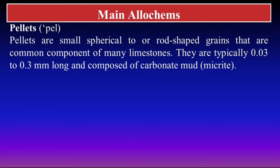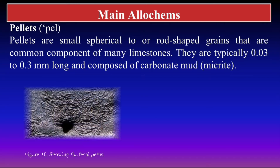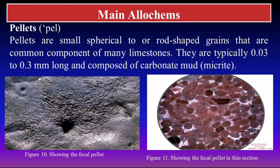The fourth allochem is pellets, abbreviated as 'pell'. Pellets are small spherical to rod-shaped grains, very small in size — about 0.03 to 0.3 millimeters — and they are composed of micrite. Here you can see pictures under thin section and on hand specimen.